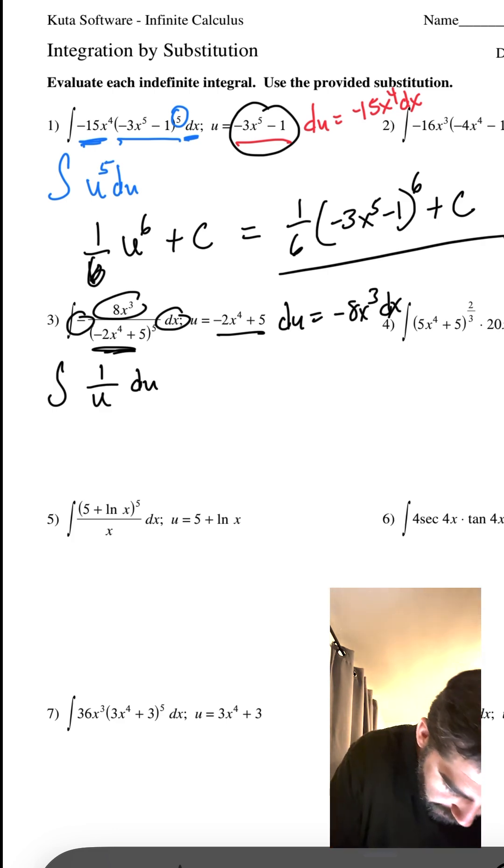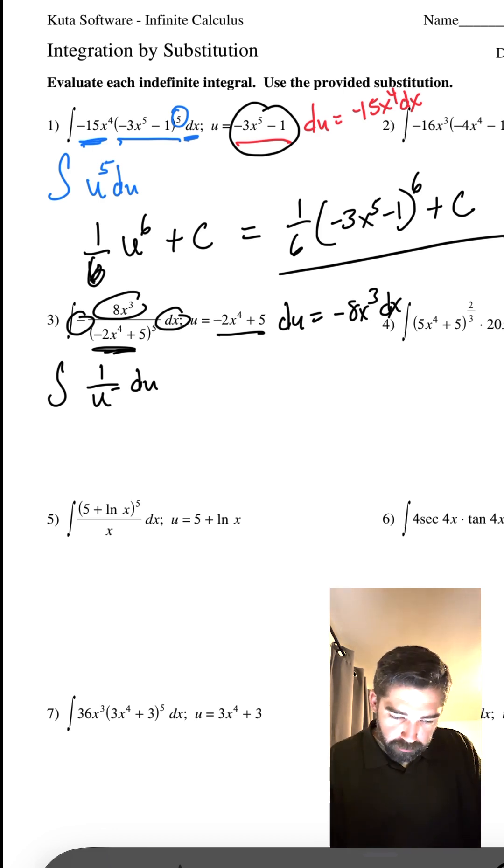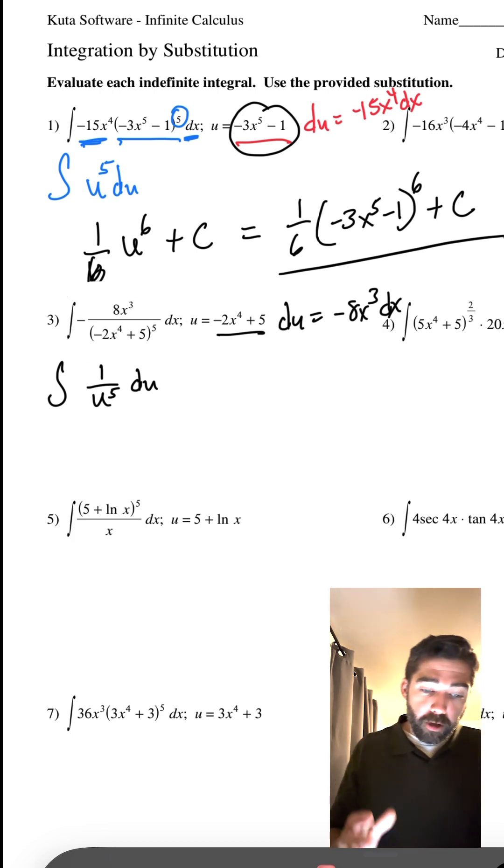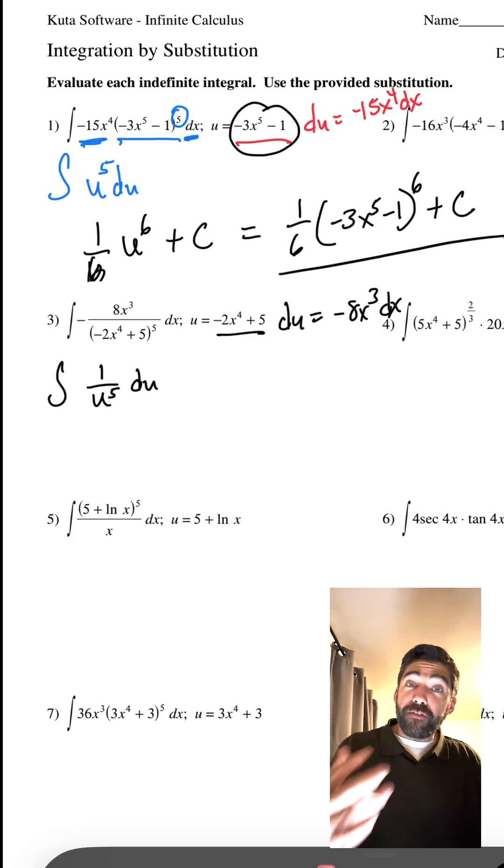So now, actually, that's not true. We have 1 over U to the fifth. I keep missing that guy. Let's not do that. Let me erase this so I can see him. So we have the integral of 1 over U to the fifth DU.